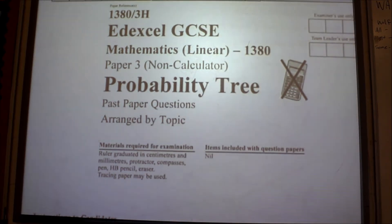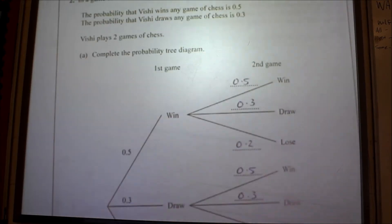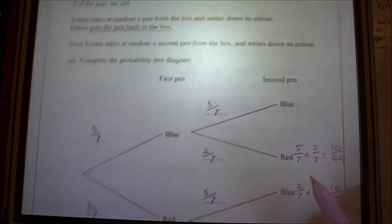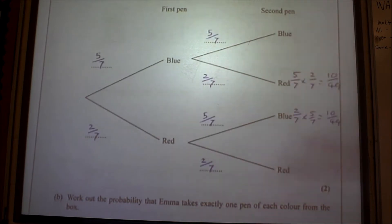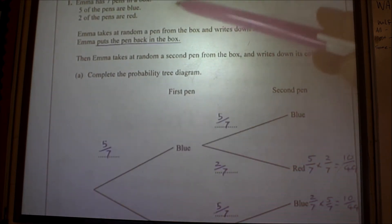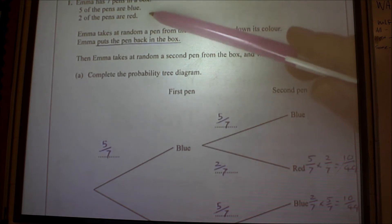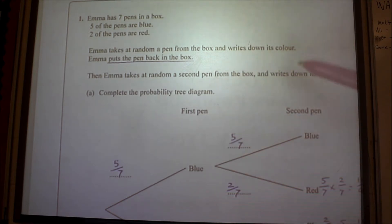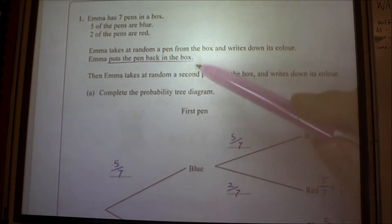Past paper questions on probability trees. Question number one. First of all, it's a classic probability tree you're going to get used to seeing these. Read the question: seven pens in a box, five are blue and two are red. Emma takes a pen from the box, writes down its color, then she puts it back in the box. I underlined that because it's quite important. And she takes a second pen.